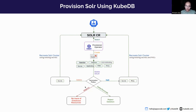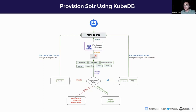We have four termination policies. First is halt — if we apply this, all secrets and PVCs will be retained. In case of delete, only secrets will be retained. If the termination policy is wiped out, then no trace of the database will remain in our cluster. But in case of do not terminate, a user will not be able to delete the database at all.